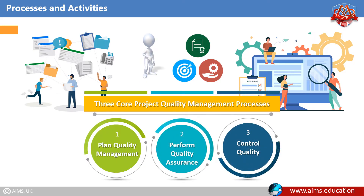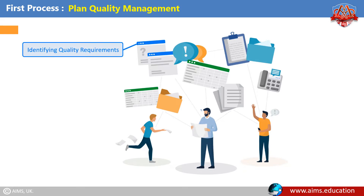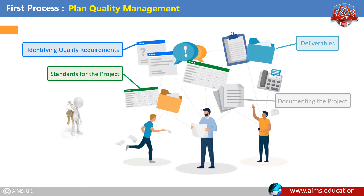First process — Plan Quality Management: It is the process of identifying quality requirements and/or standards for the project and its deliverables, and documenting how the project will demonstrate compliance with relevant quality requirements. Key Benefit: This process provides guidance and direction on how quality will be managed and validated throughout the project.